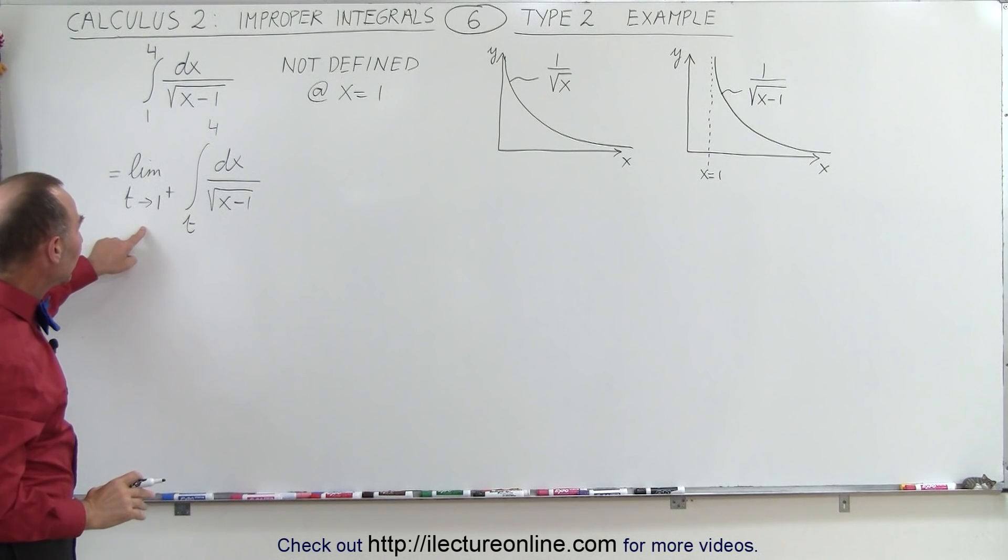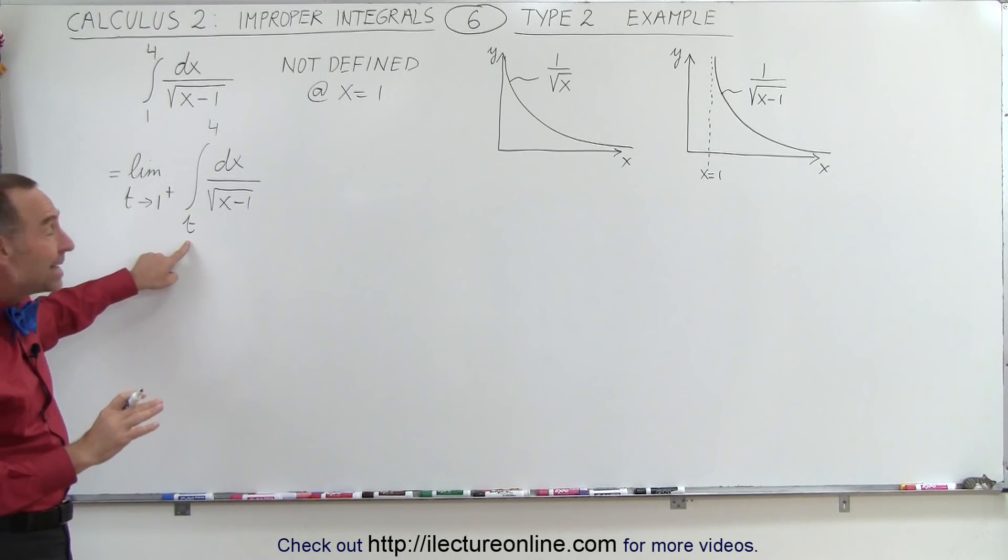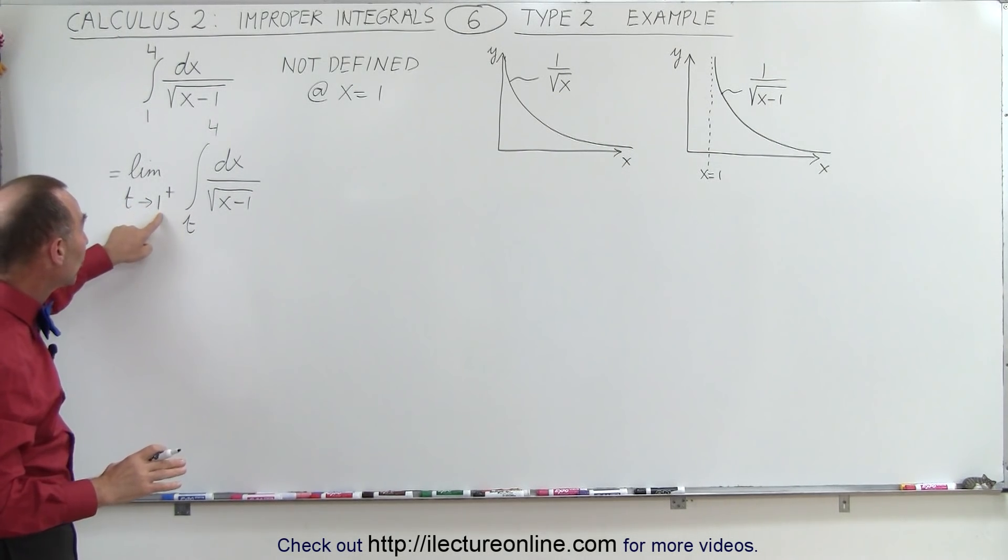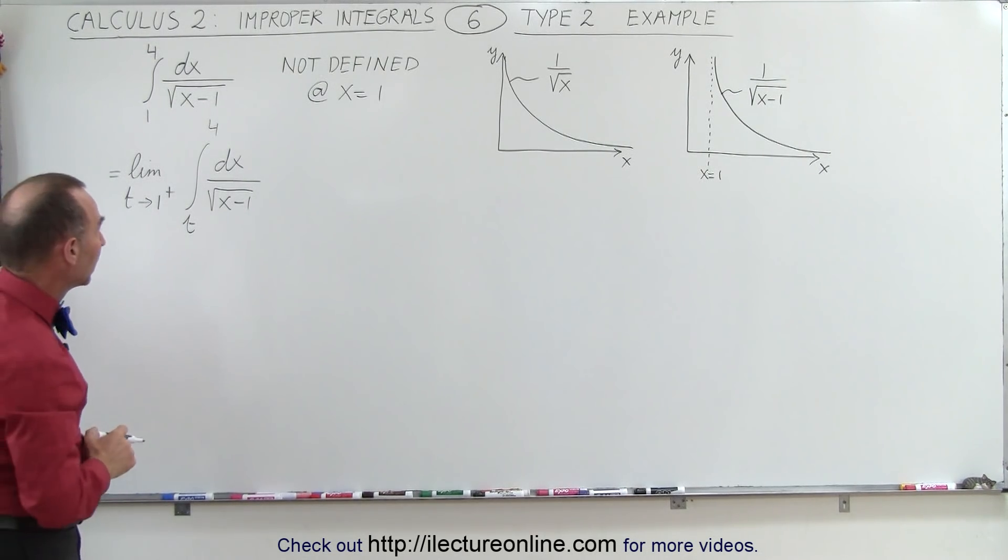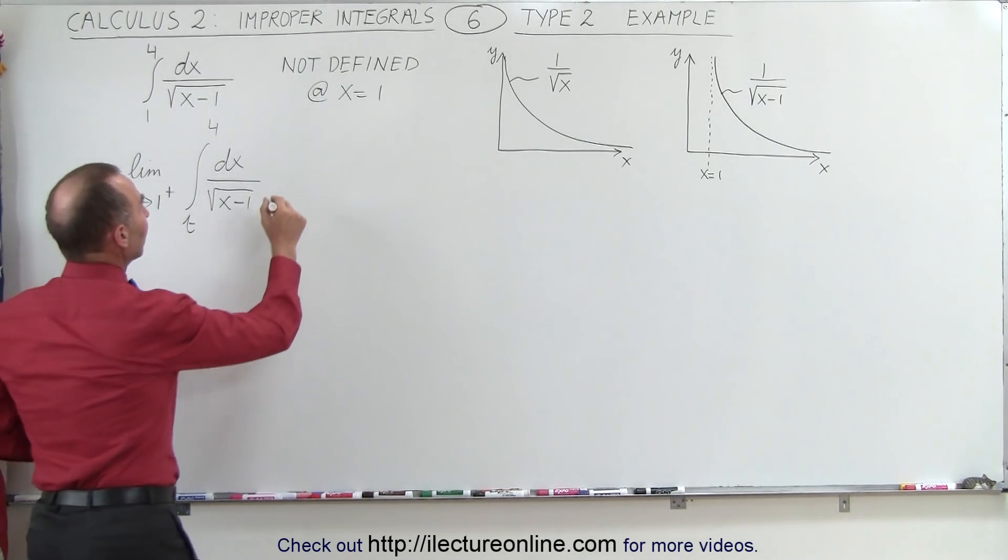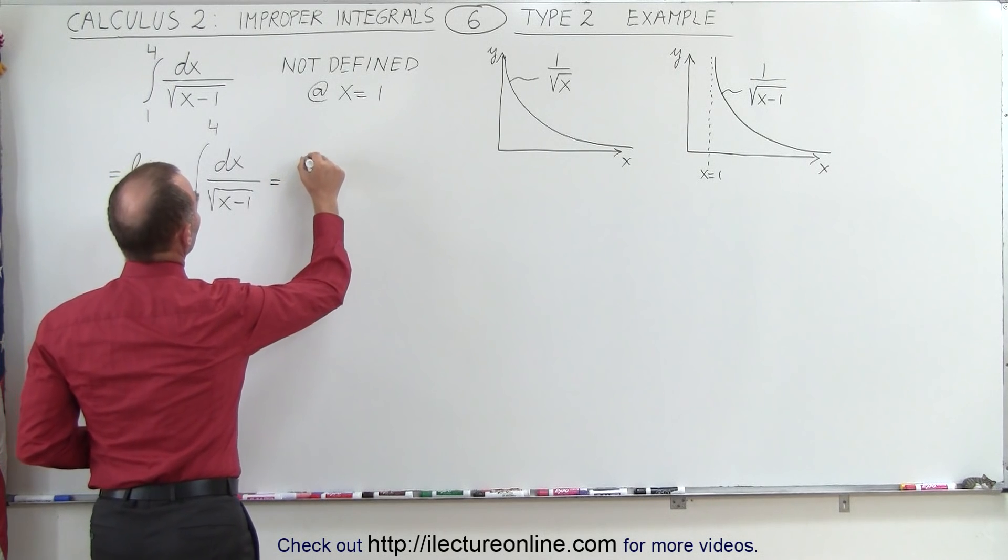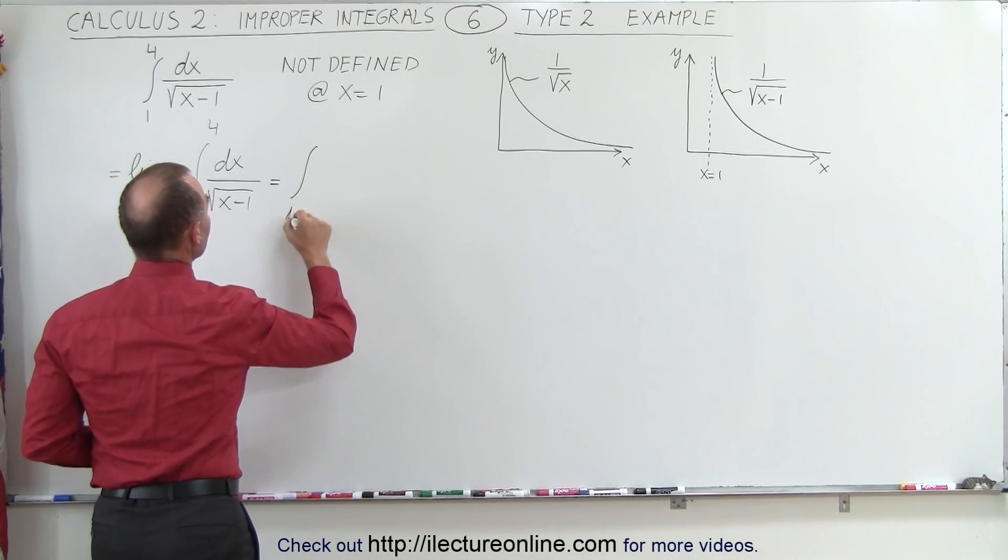So what we're going to do now is we're going to first plug in the limit t, and then allow t to approach 1 from above to evaluate the integral. Now we can integrate this by rewriting as follows. This is equal to the integral from t to 4, and write this as the quantity x minus 1 to the minus 1 half power dx.